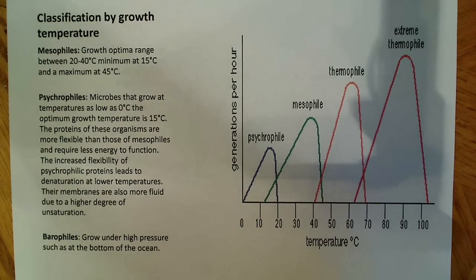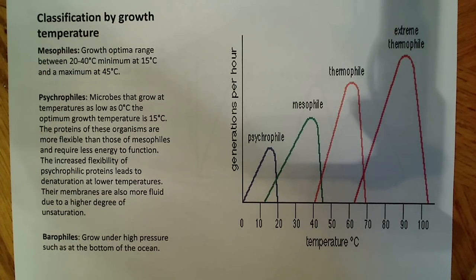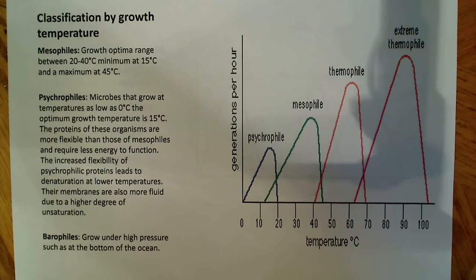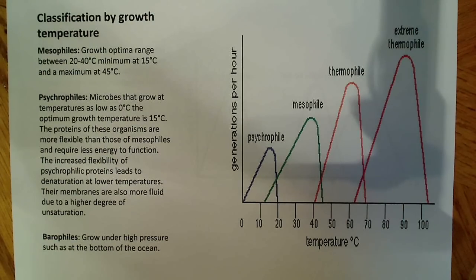This flexibility is also an issue for the lipids — you're going to have more unsaturation leading to more fluid lipid membranes and phospholipid bilayers. Interestingly, this increased flexibility is also why psychrophiles cannot exist at higher temperatures: their proteins will denature at lower temperatures. Our proteins need more heat to denature, but for psychrophiles, a slight increase above their range — above about 20 degrees Celsius — will start to cause protein denaturation. The membranes are also more fluid due to the higher degree of unsaturation.